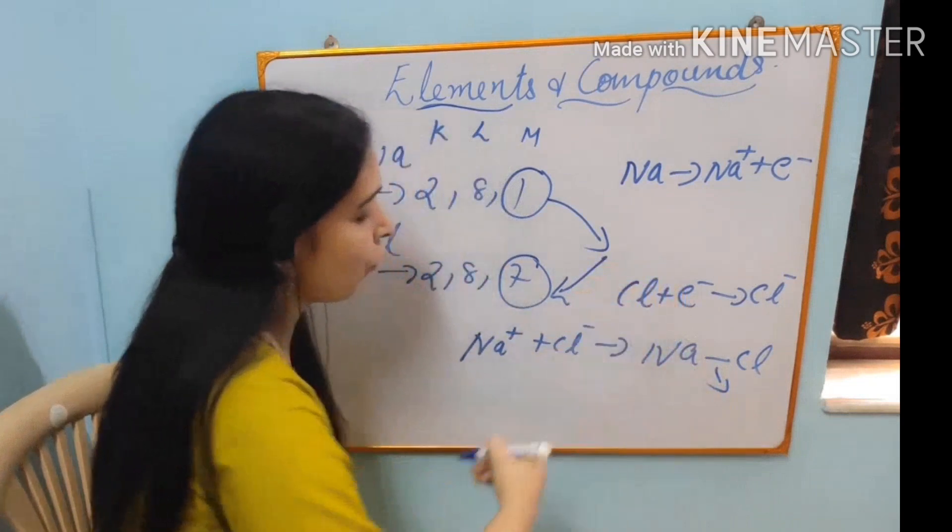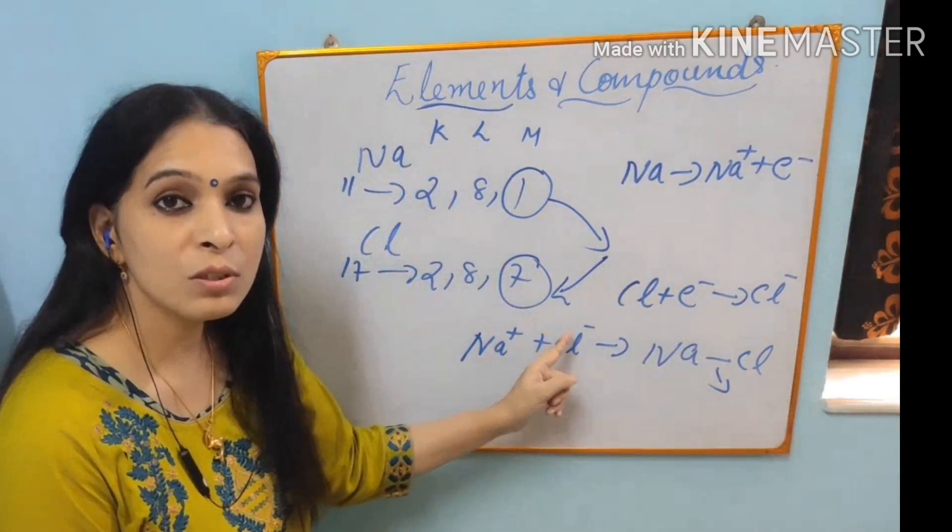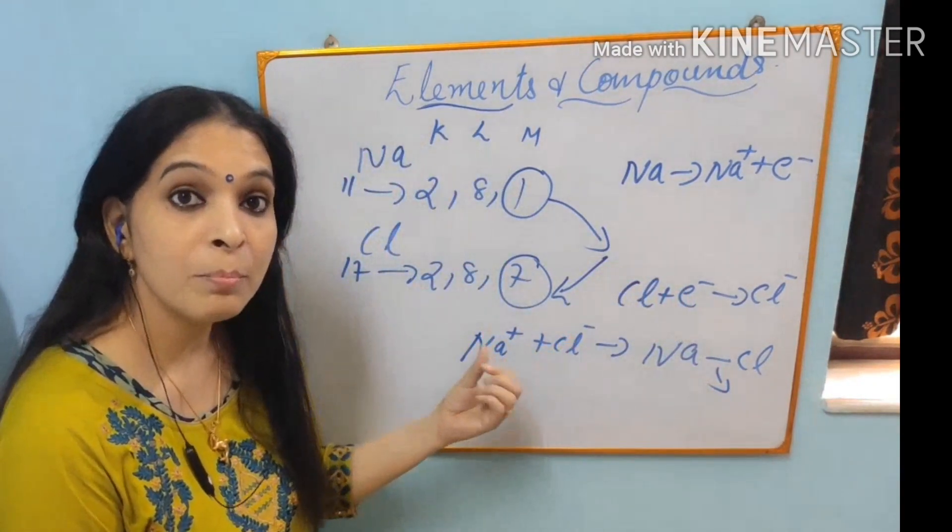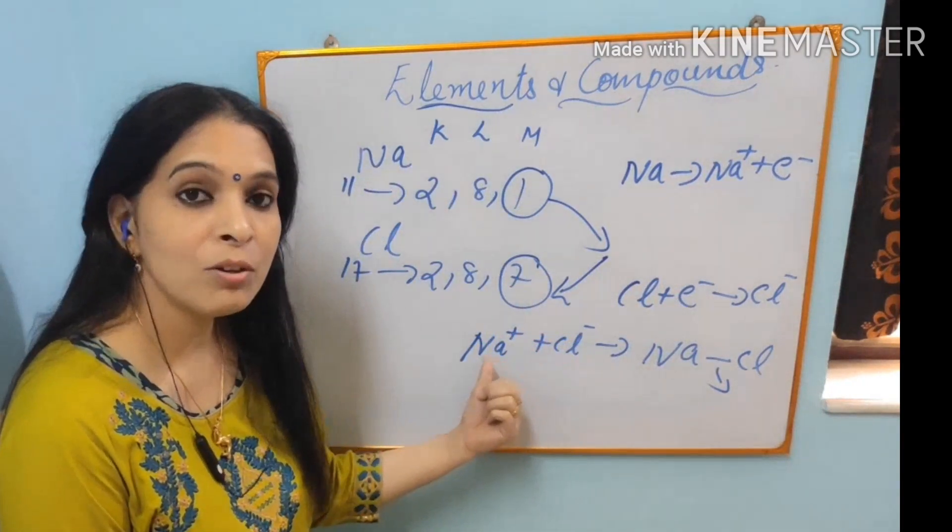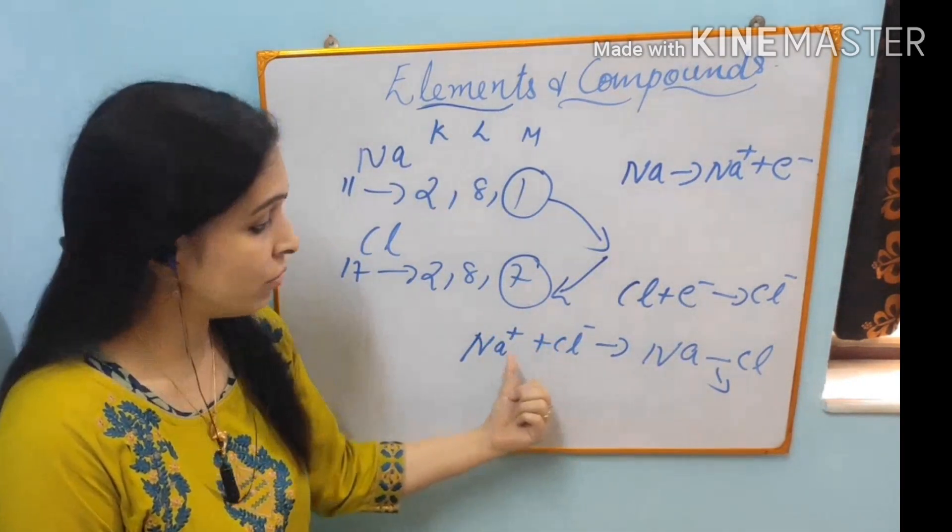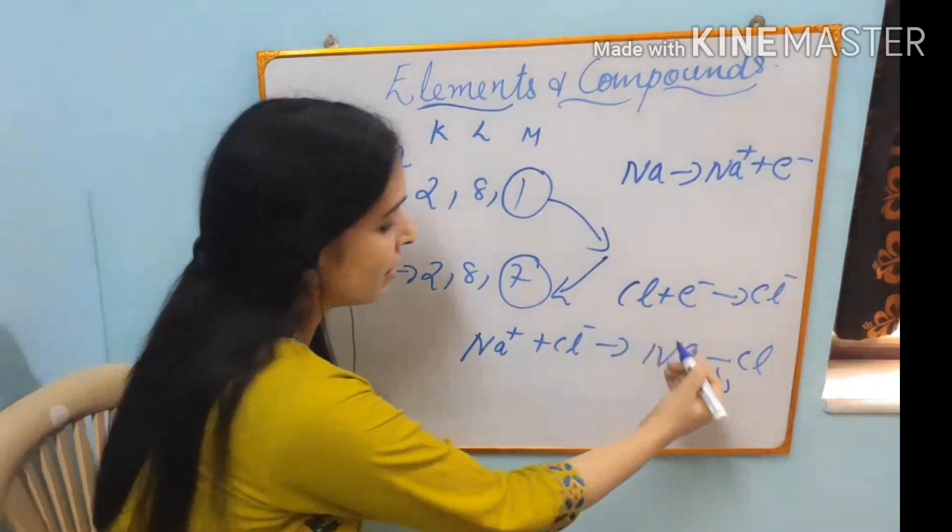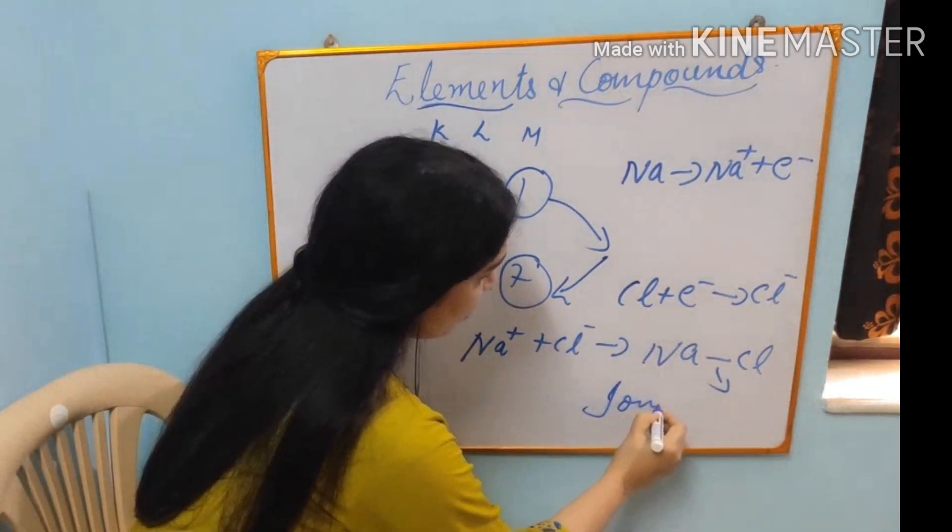This bond which is formed by the electrostatic force of attraction, means because of the charges, positive and negative charges. Because of the electrostatic force of attraction, this bond is formed. And such bonds are known as ionic bonds.